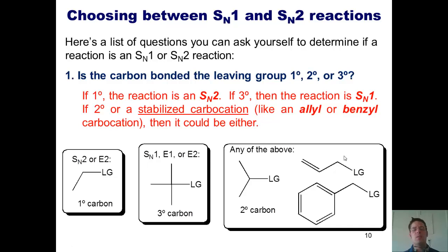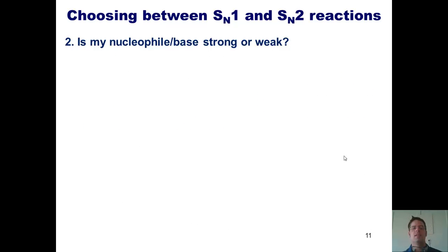That's our first question. Once again, we just ask ourselves, is the carbon stuck to my leaving group primary, secondary, or tertiary? If it's primary, it's going to go SN2. If it's tertiary, it's going to go SN1. If it's secondary, it could be either or. But which one will it be? The answer depends on my nucleophile or base.